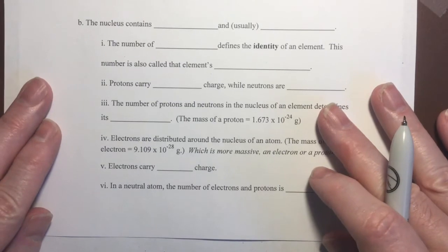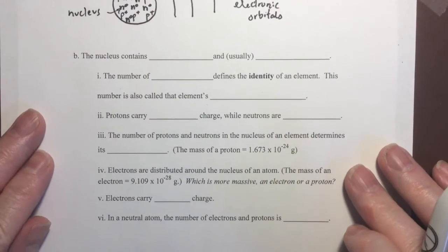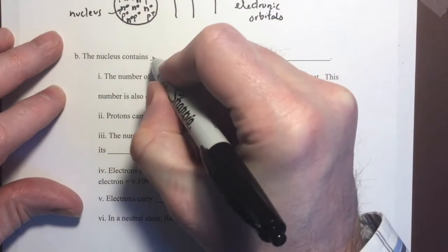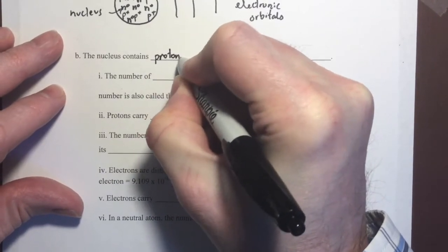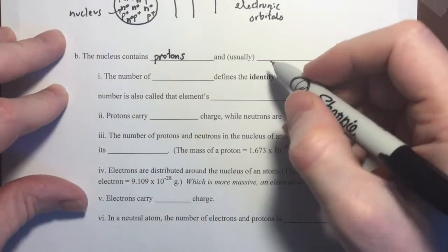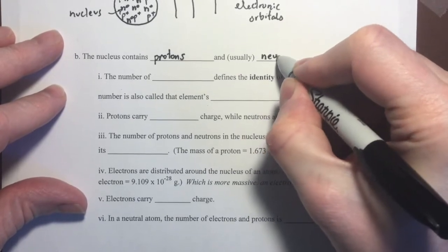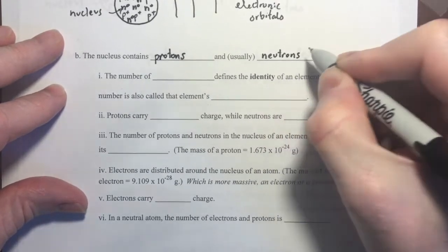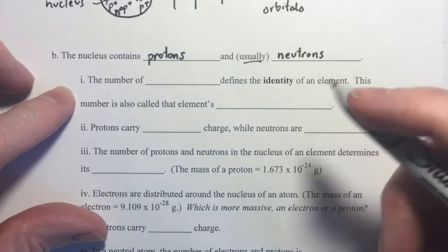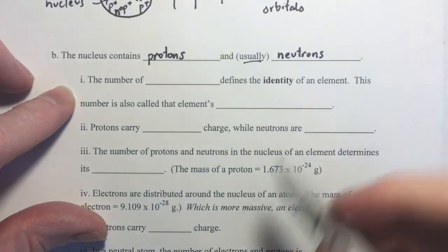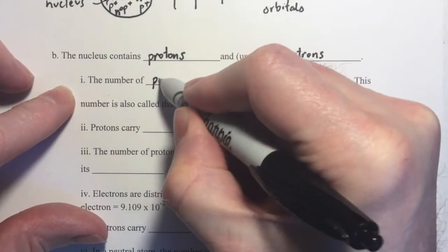So, let's fill in some gaps here. The nucleus contains, always contains protons, and it usually contains neutrons. Filling in some other gaps. The number of what identifies the identity of the element? The number of protons.